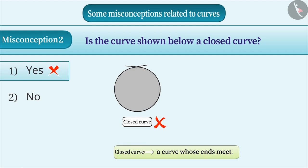The definition of closed curve states that a curve whose ends are joined is called closed curve. Are the ends of the curve joined? Think for a while.